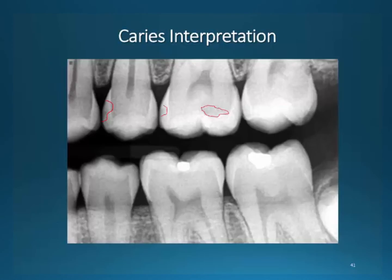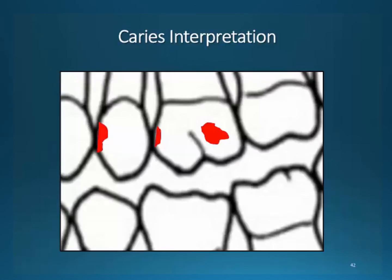Mesial of number 13, mesial of 14, occlusal of 15 — note that, directly under the cusp. There may be a few other areas possibly on 19, but the image is not clear enough to document. Here is a visual image of how they would be presented in the patient's chart.